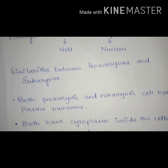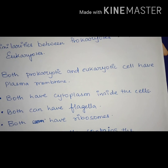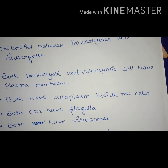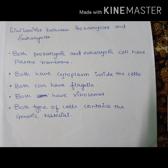Let's move on to the similarities between prokaryotes and eukaryotes. Both prokaryote and eukaryotic cells have a plasma membrane. Both of them have cytoplasm inside the cell. Both can have a flagella. Both have ribosomes, and both types of cells contain genetic material.